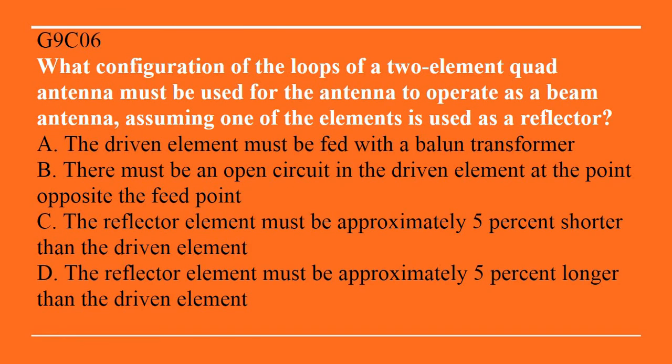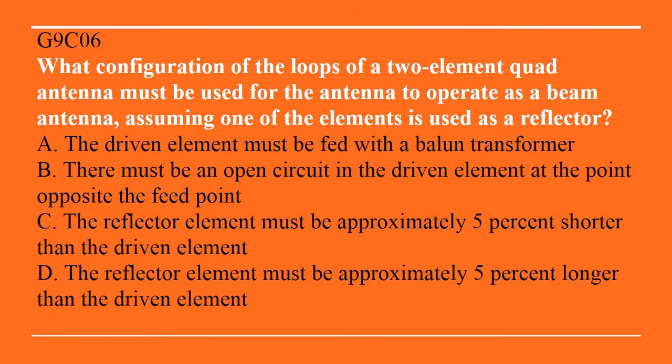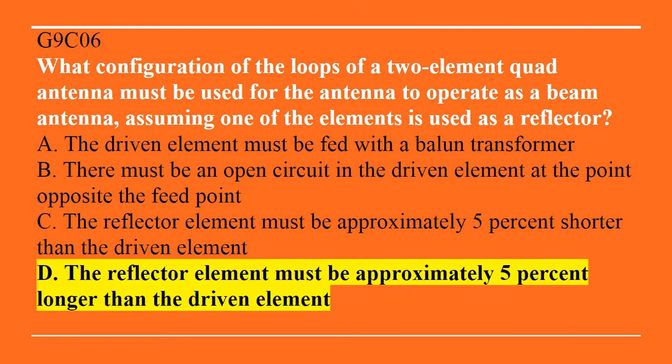G9C06: What configuration of the loops of a two-element quad antenna must be used for the antenna to operate as a beam antenna, assuming one of the elements is used as a reflector? A. The driven element must be fed with a balun transformer. B. There must be an open circuit in the driven element at the point of the opposite feed point. C. The reflector element must be approximately 5% shorter than the driven element. Or D. The reflector element must be approximately 5% longer than the driven element. The correct answer is D — the reflector element must be approximately 5% longer than the driven element.